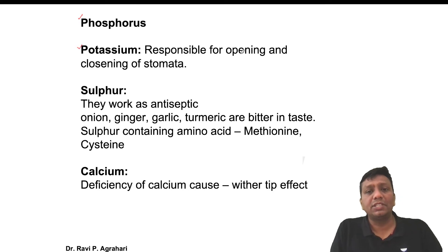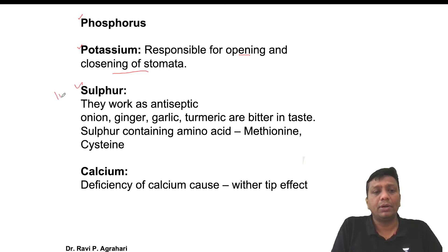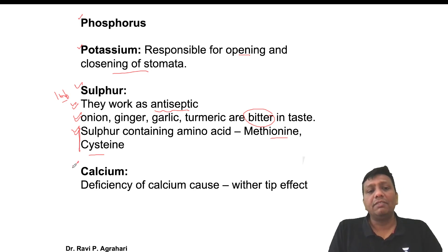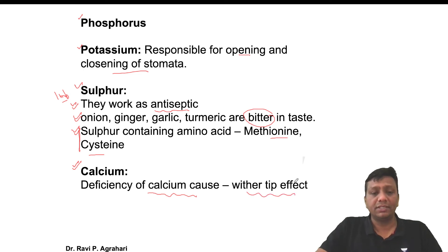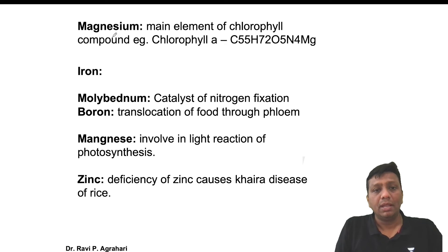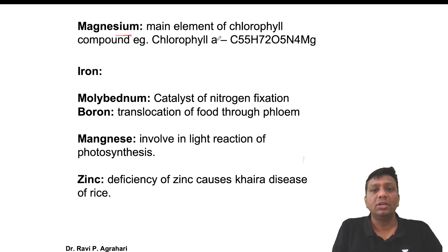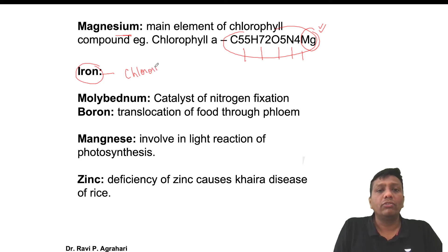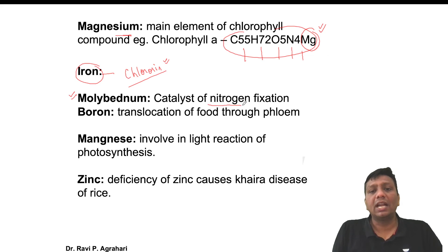Potassium is responsible for the opening and closing of stomata. Sulfur works as an antiseptic - onion, ginger, garlic, and turmeric are bitter in taste because of sulfur. Two amino acids, methionine and cysteine, are also made up of sulfur. Calcium is very important for plant and animal growth - deficiency of calcium in plants causes a withering effect. Magnesium is the central element in chlorophyll structure (C55H72O5N4Mg). Iron is very important - deficiency of iron causes the leaf to lose its chlorophyll content, which is called chlorosis.